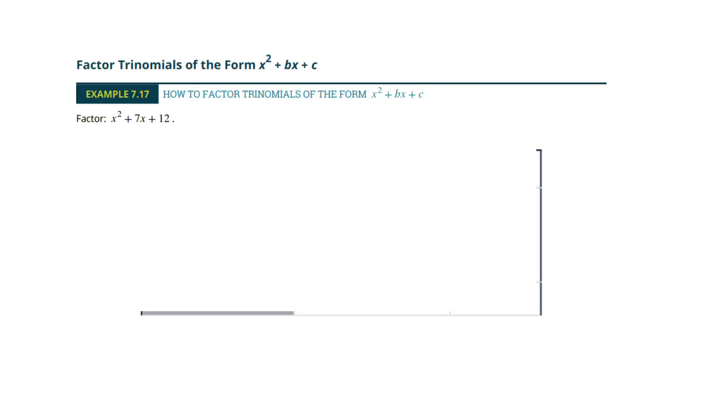All right, we're continuing here with factoring. We're going to talk about factoring with trinomials. So trinomials have three groups or three terms. I've got a group here, a group here, and a group here. Three pieces, that's where tri, like tricycle, is coming from.